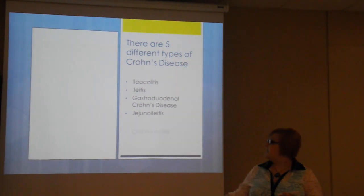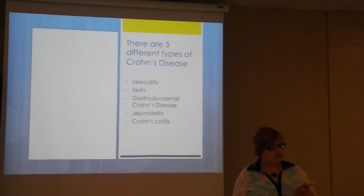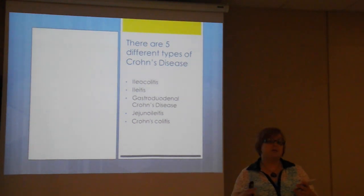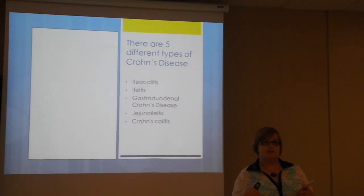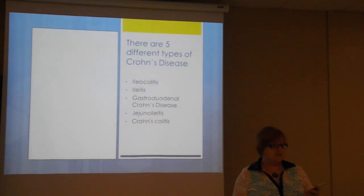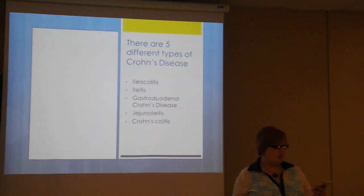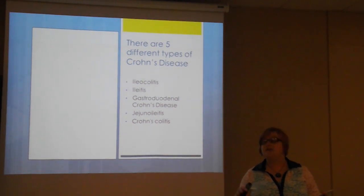The last kind of Crohn's is Crohn's colitis, which affects the colon only. The symptoms include diarrhea and rectal bleeding. The disease can show itself on the outside skin around the anal area. Skin lesions and joint pain are very common in this form of Crohn's, and you're pretty much only going to see joint pain and lesions in this form.